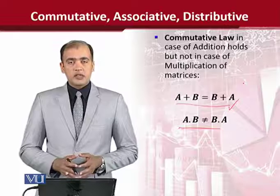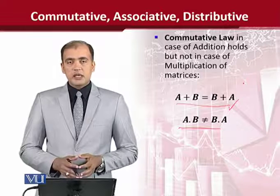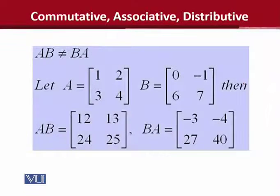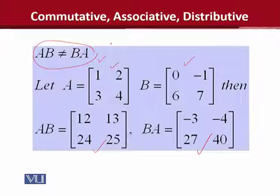This is for your rehearsal. I will demonstrate the multiplication case to show how this law is refuted or rejected. We have matrix A and matrix B. We calculate A times B, and then we calculate B times A separately. A times B means we write A first, then B; B times A means we write B first, then A. Looking at the results, the answers are not equal, which means the commutative law does not hold for matrix multiplication.